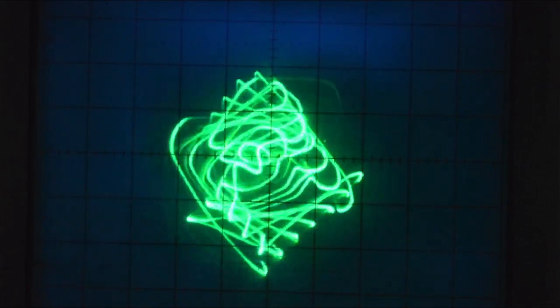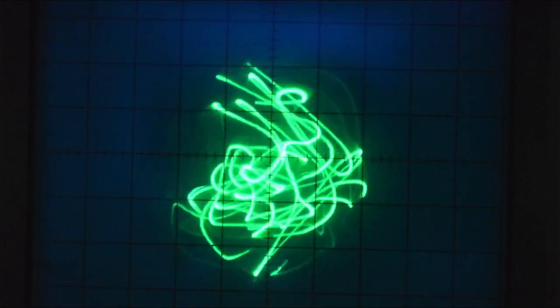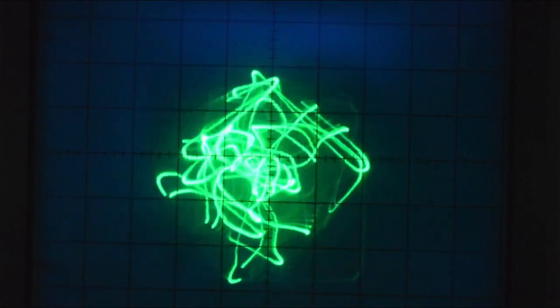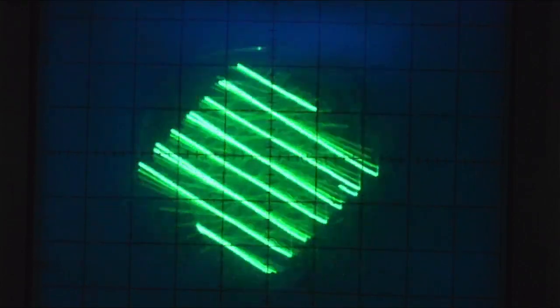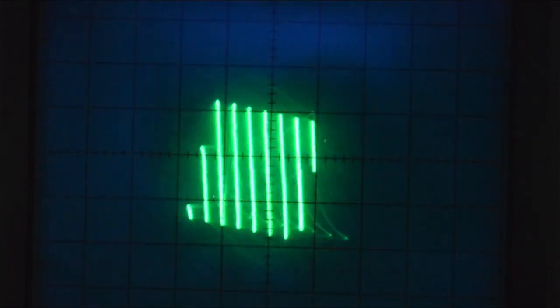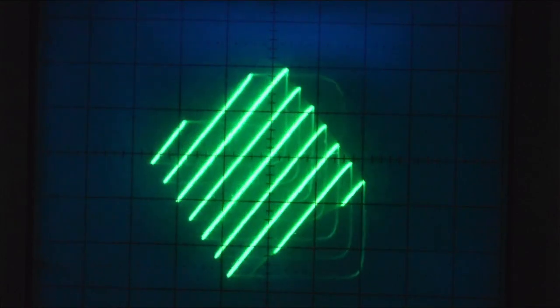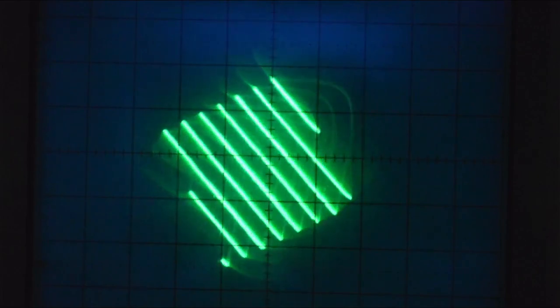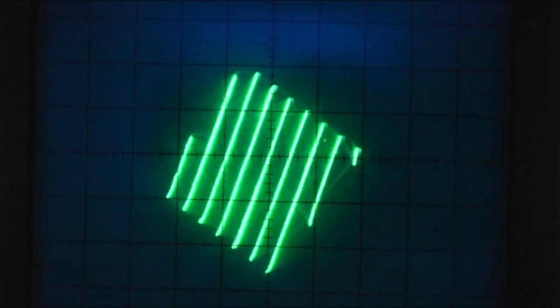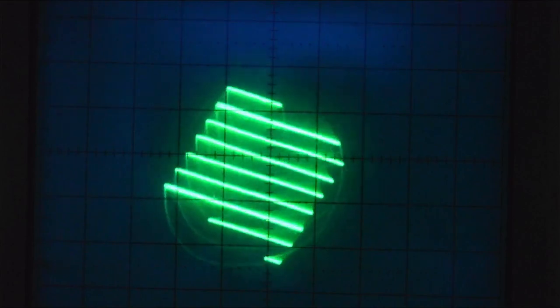You know, our cathode ray tubes only make organic shapes, right? So speaking of organic shapes, I'm going to go ahead and go back into the slower rotation mode. That's just one example of something that you can do with one of these patches.